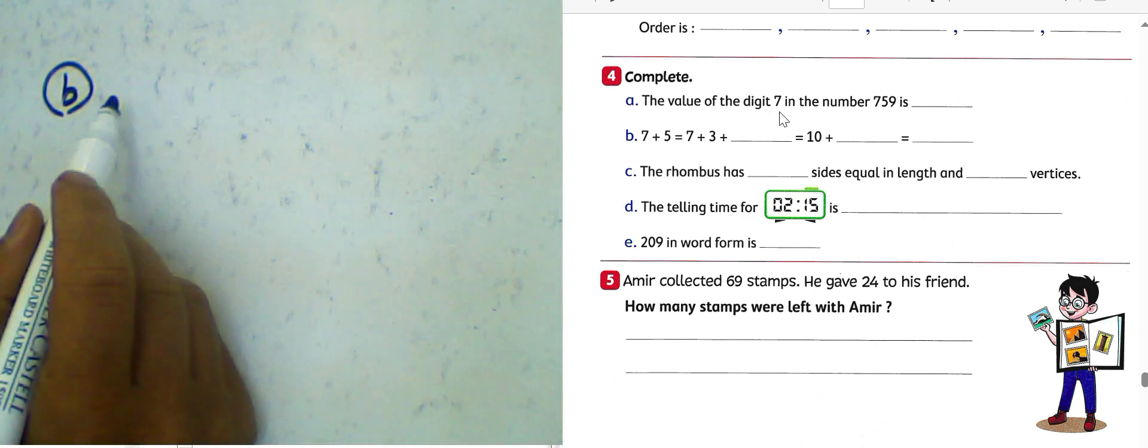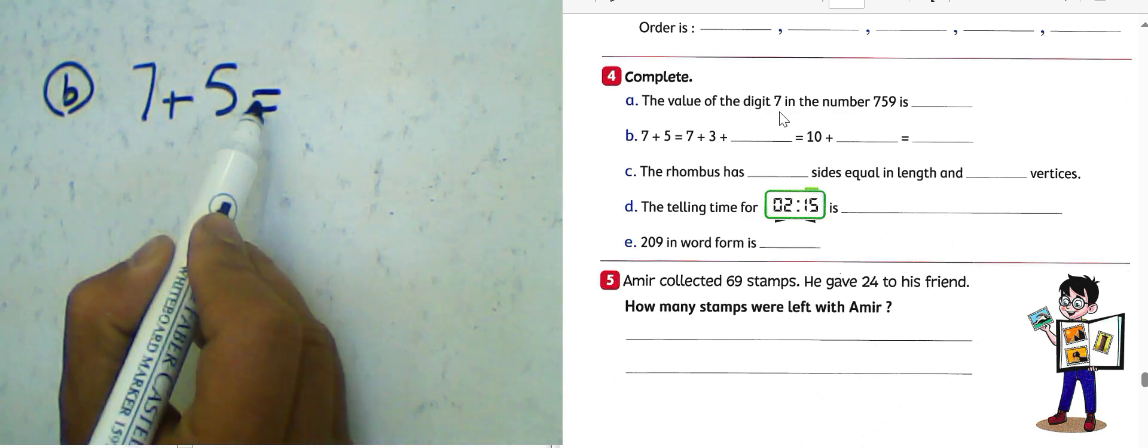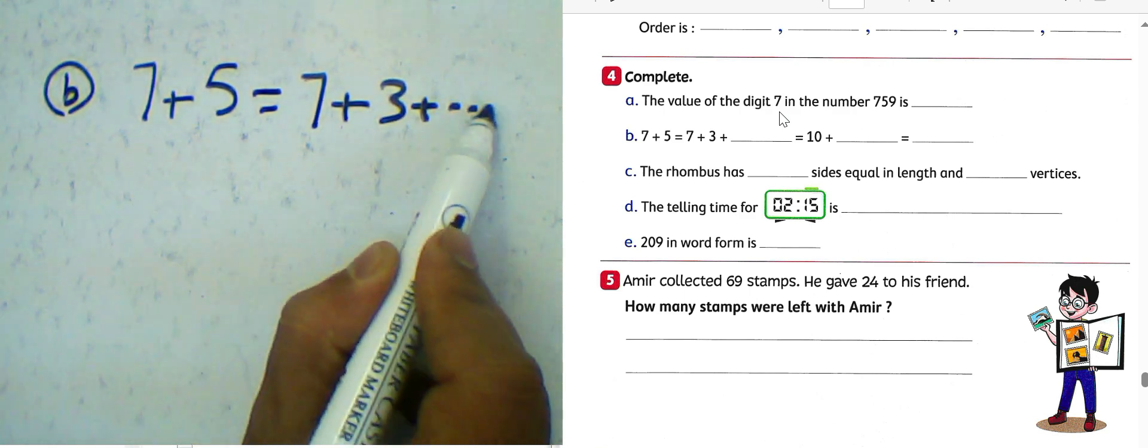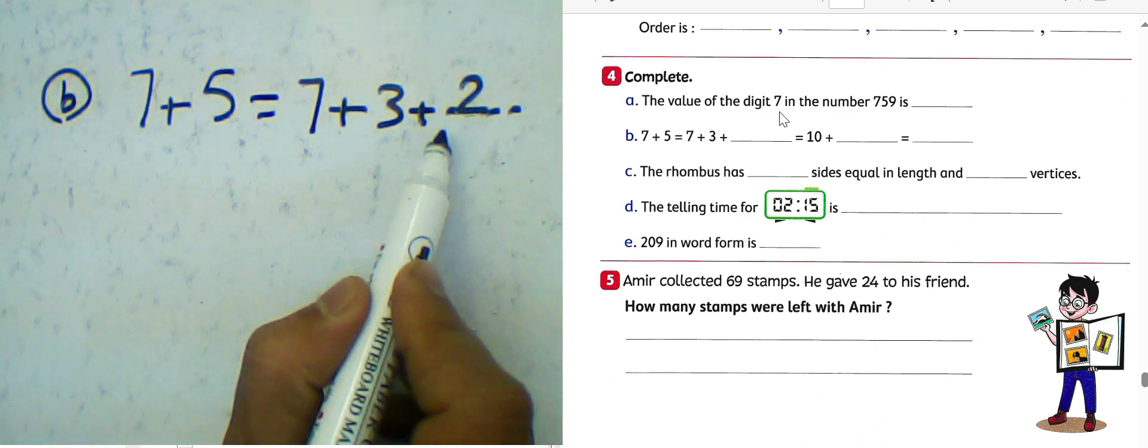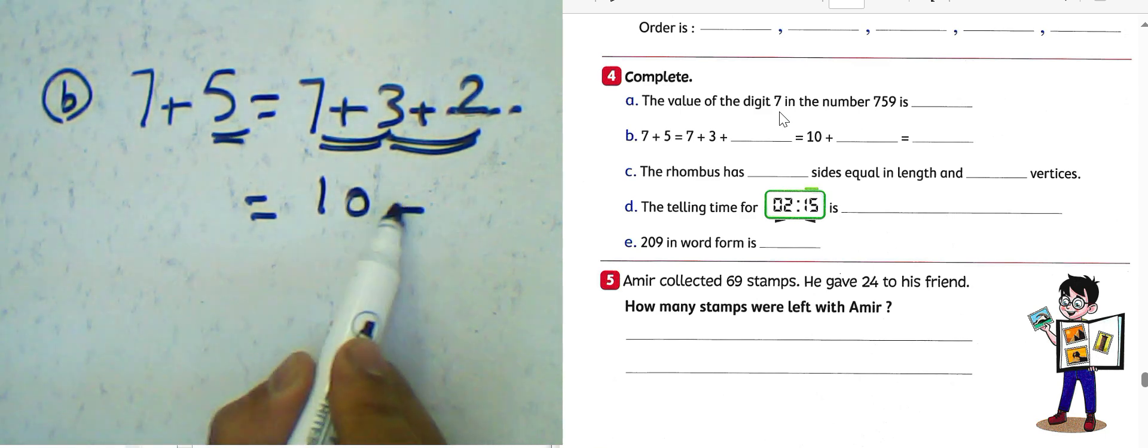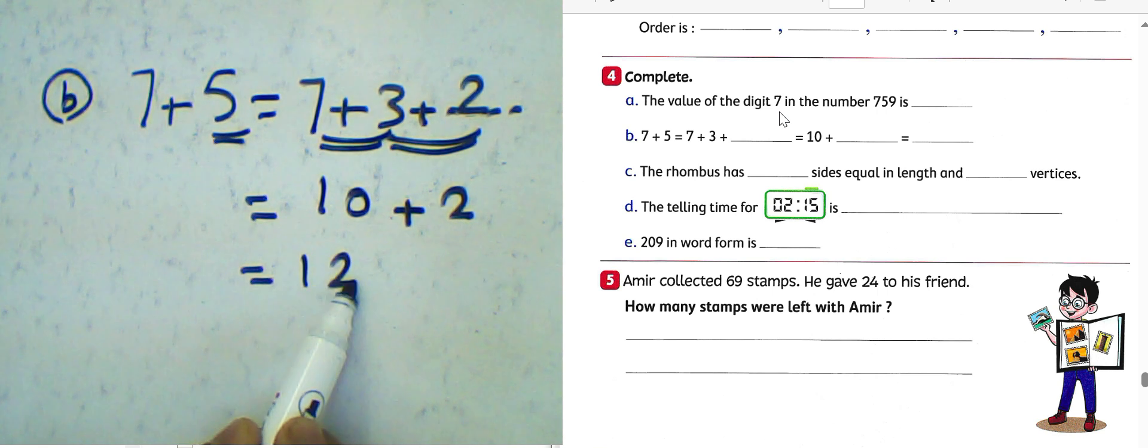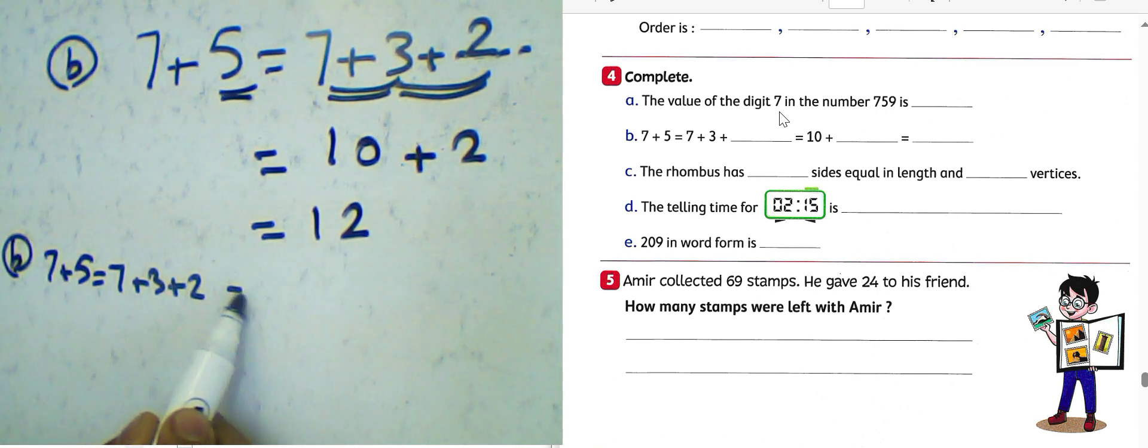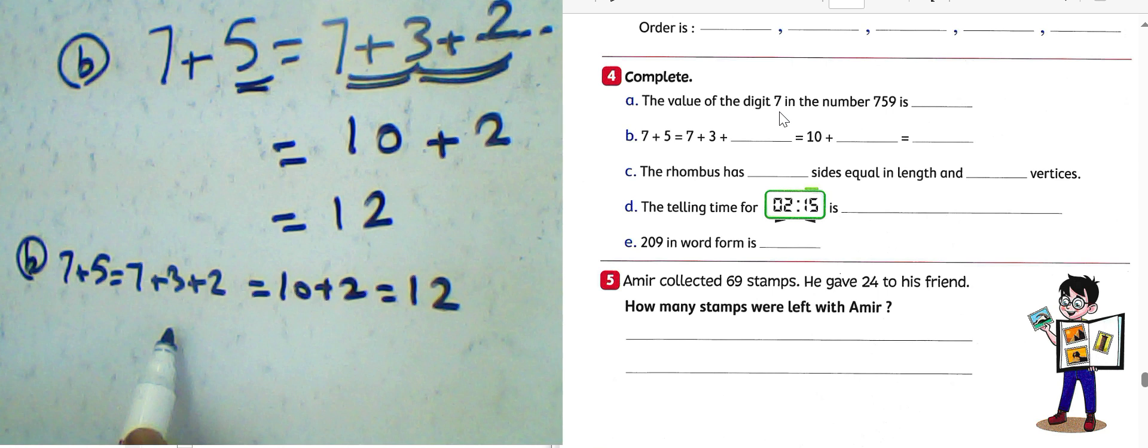Letter B: 7 plus 5 equals 7 plus 3 plus space. We can write 3 plus 2, because 3 plus 2 will be 5. And then 7 plus 3 equals 10, 10 plus 2 will be 12. So the result is 12 and 12. You must write in the place here, write 2.